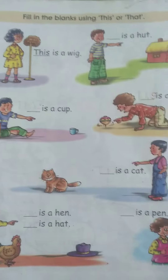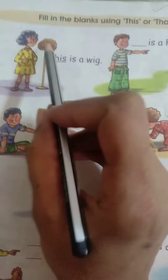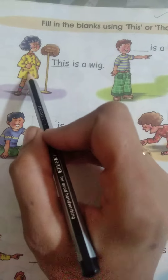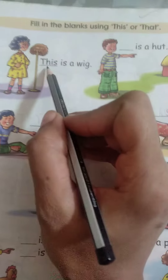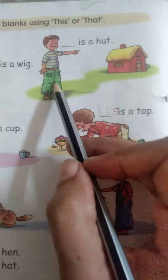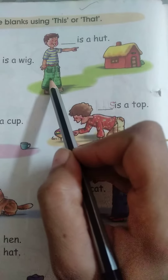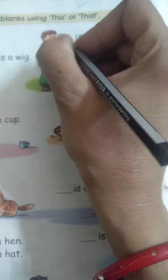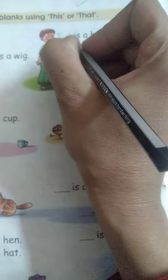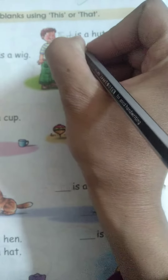Firstly, you will see the picture. See here — there is a girl and a wig is near to her, so 'this' is already used. And you can see there is a boy but the hut is far away from him, so we will use 'that' here. Kyunki hut boy se dur hai, isliye hum yaha 'that' use kare hai.